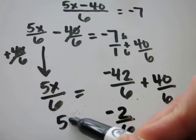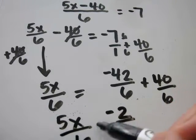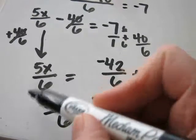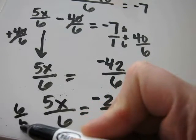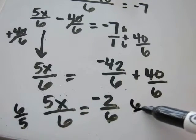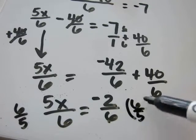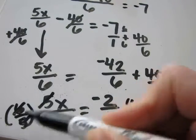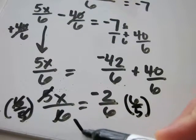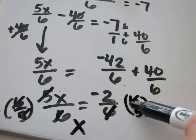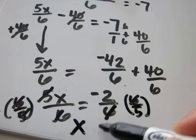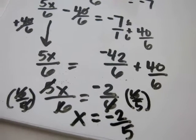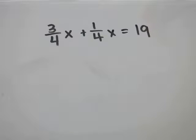Now we've got 5x over 6. To solve for x, I will multiply the reciprocal of 5 over 6, which is 6 over 5. Multiply that by each side. All this cancels out, leaving you with x. On this side, the 6's will cancel out, leaving you with negative 2 over 5.